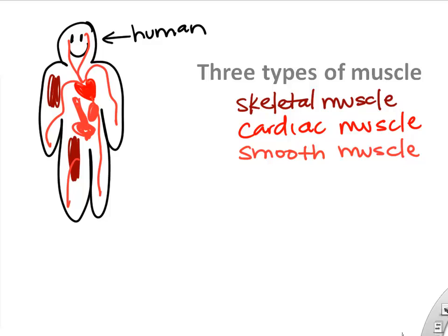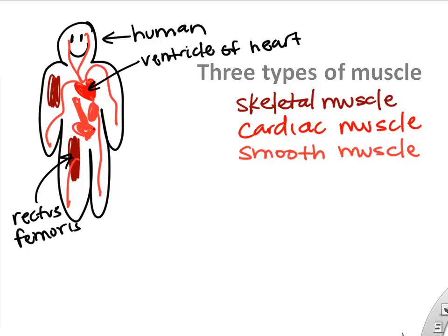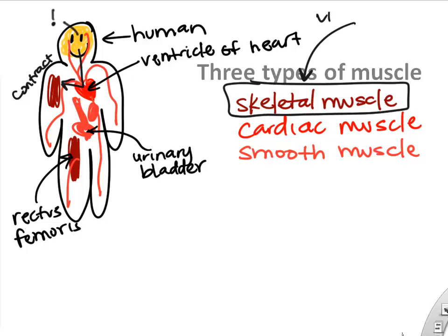Cardiac muscle is only found in the heart, and skeletal muscle includes all those muscles in your leg, back, core, and arms that you use voluntarily to walk around and stand up. The urinary bladder is a good example of smooth muscle, and of course the heart is cardiac muscle. When our brain sends signals down, it sends electrical impulses through nerves to control skeletal muscle — and skeletal muscle is the only voluntary control you have in your body.